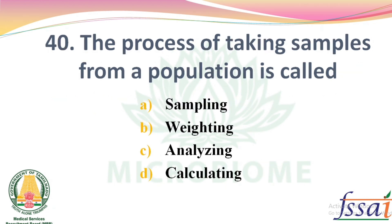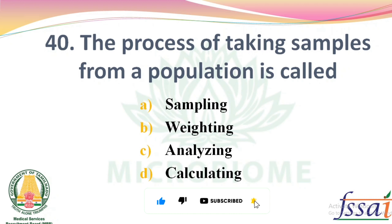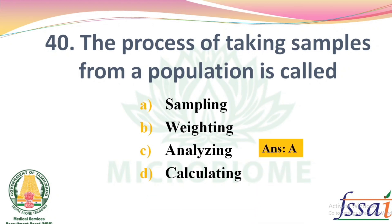The process of taking samples from a population is called — Options: Sampling, Weighing, Analyzing, Calculating. The right answer: Option A, Sampling.